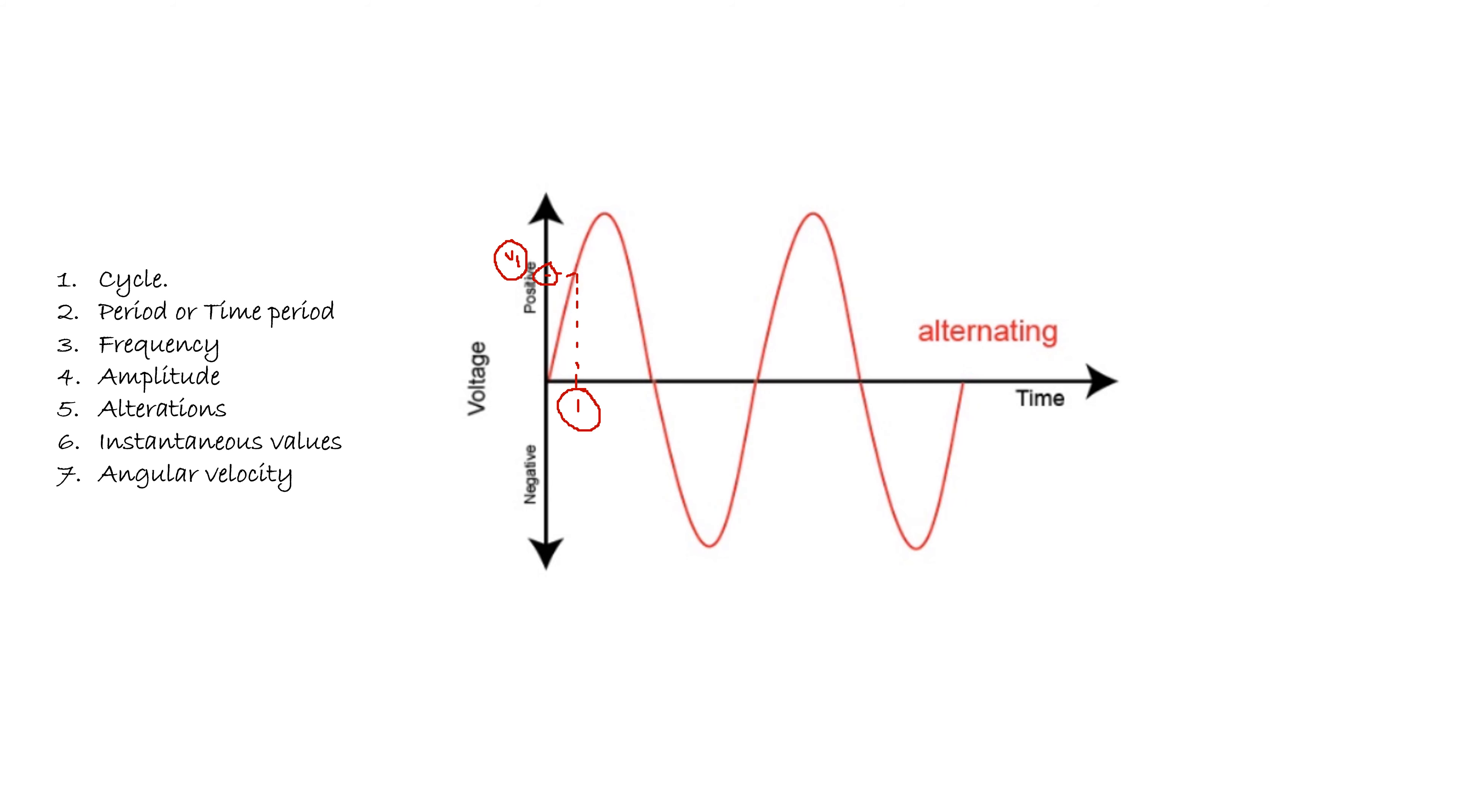The other term is angular velocity. The angle through which any radius of a body turns in a second is called angular velocity. It is usually represented by omega and is measured in radians per second.